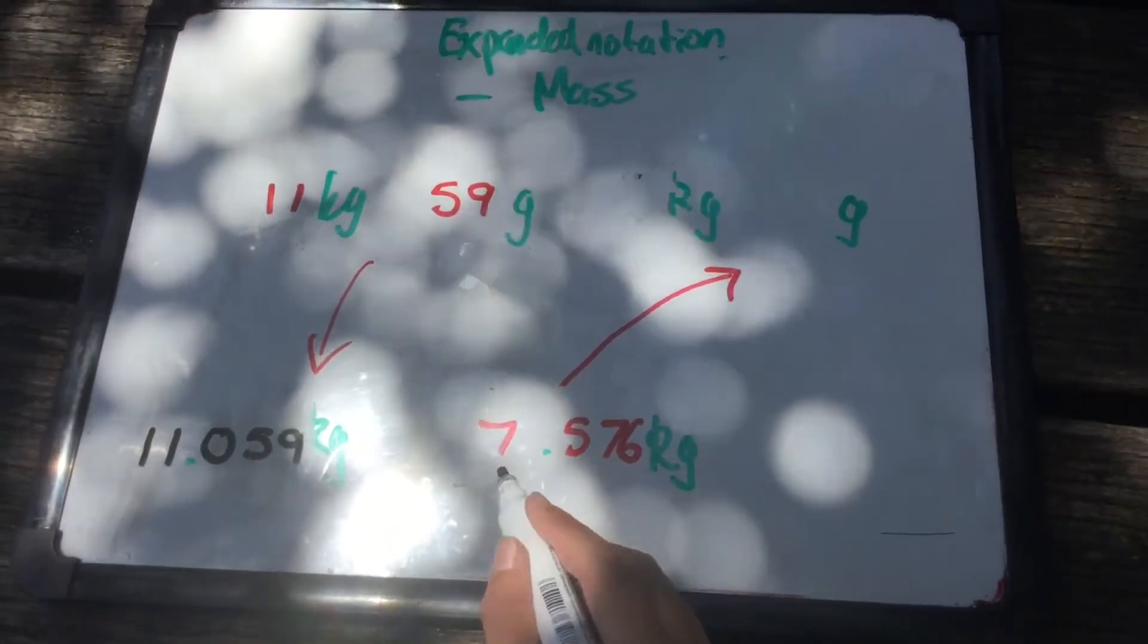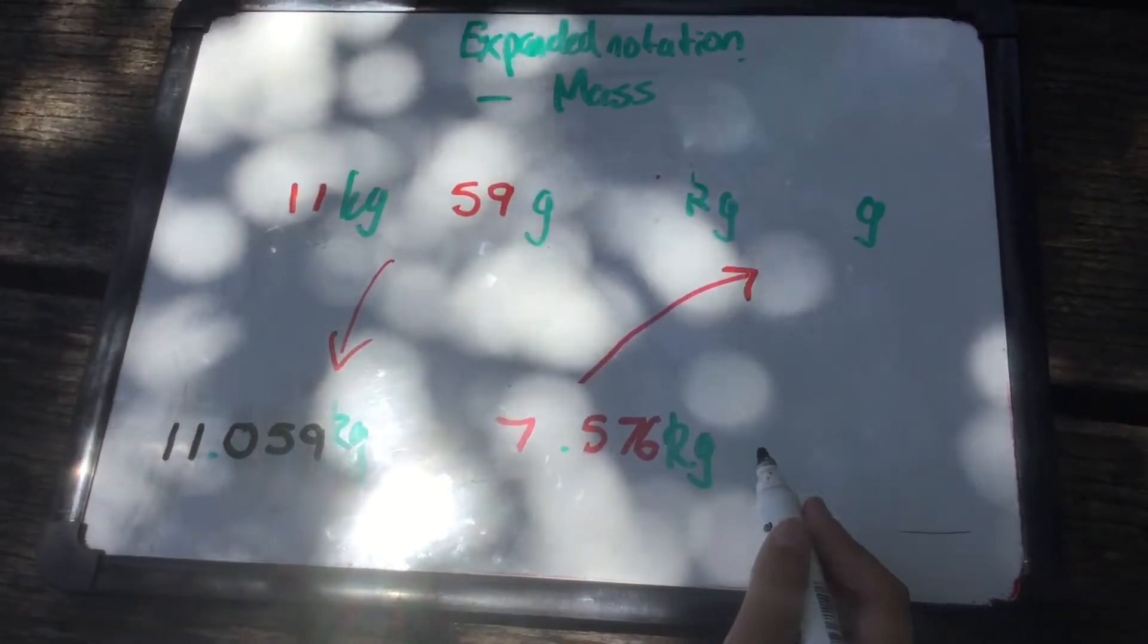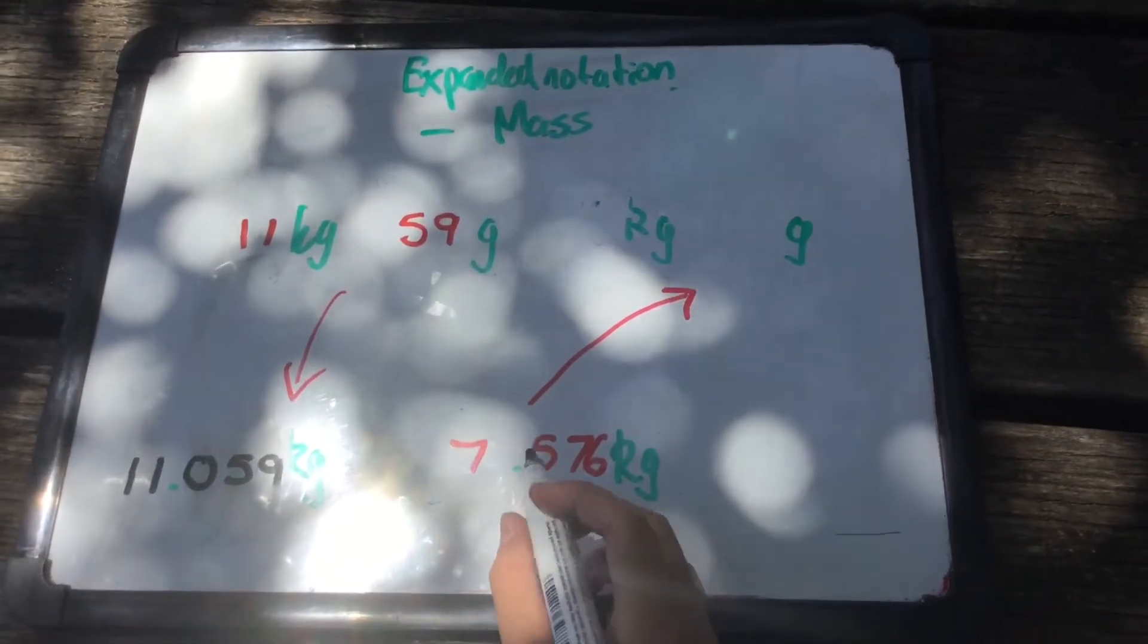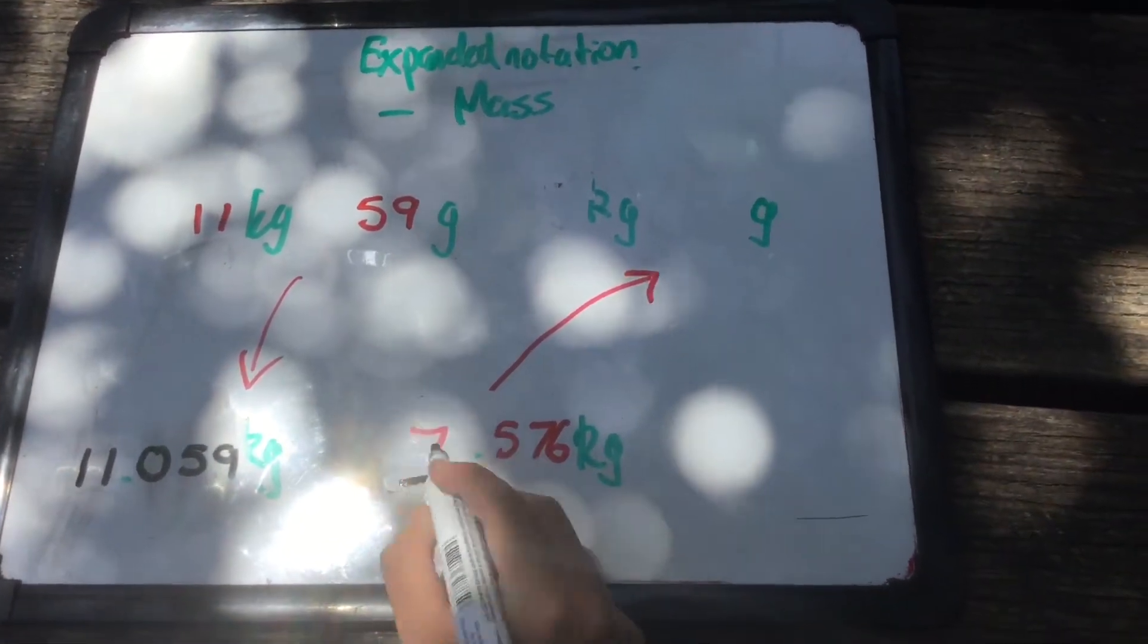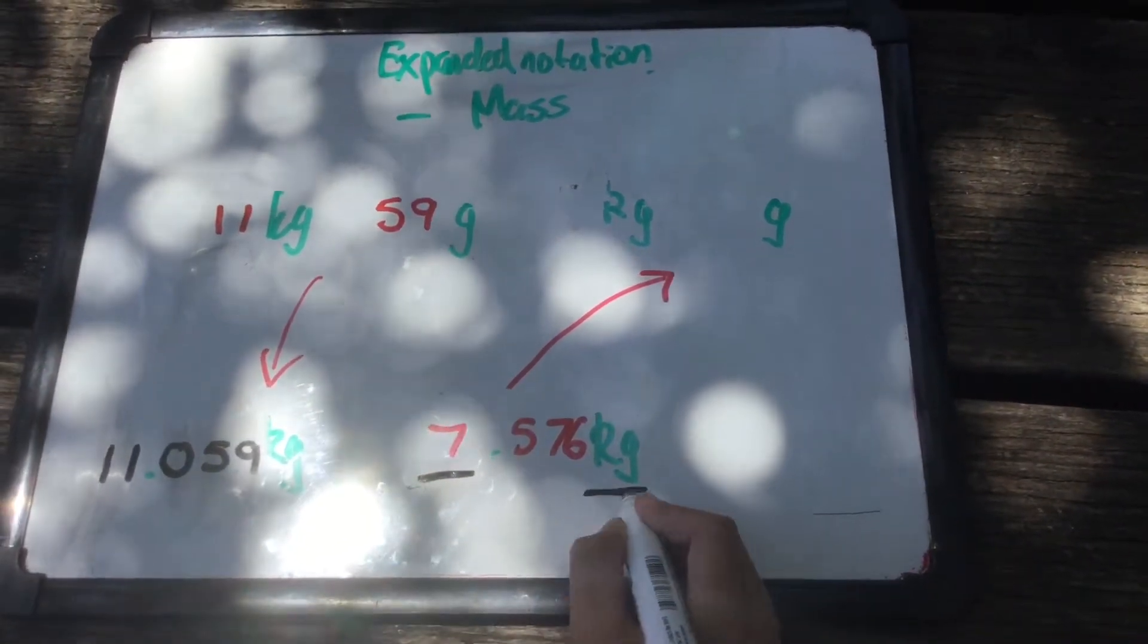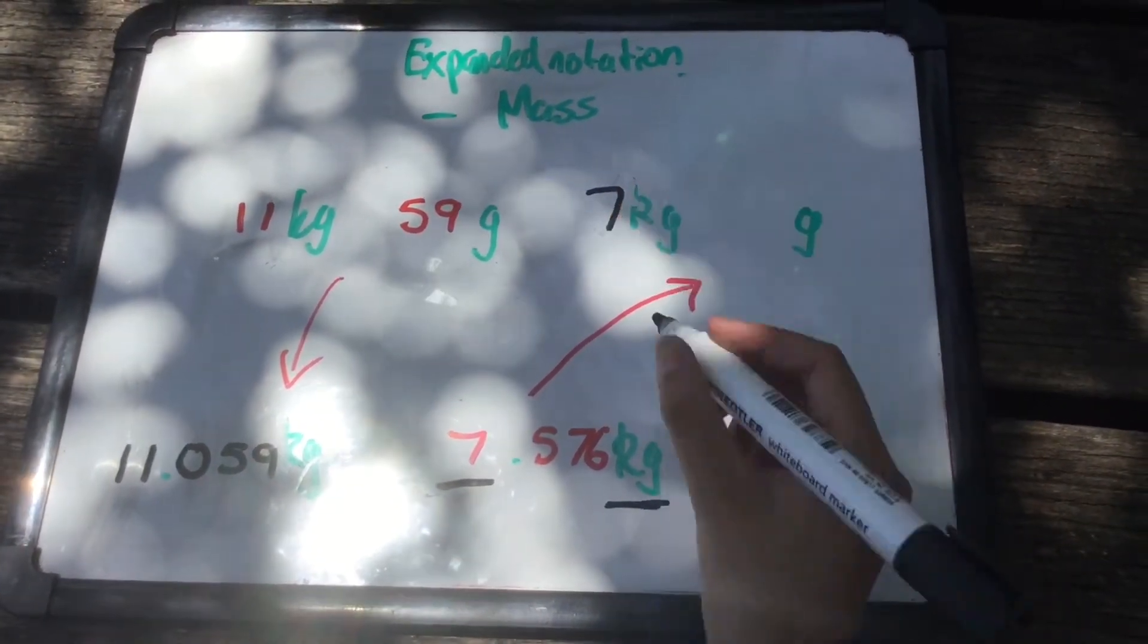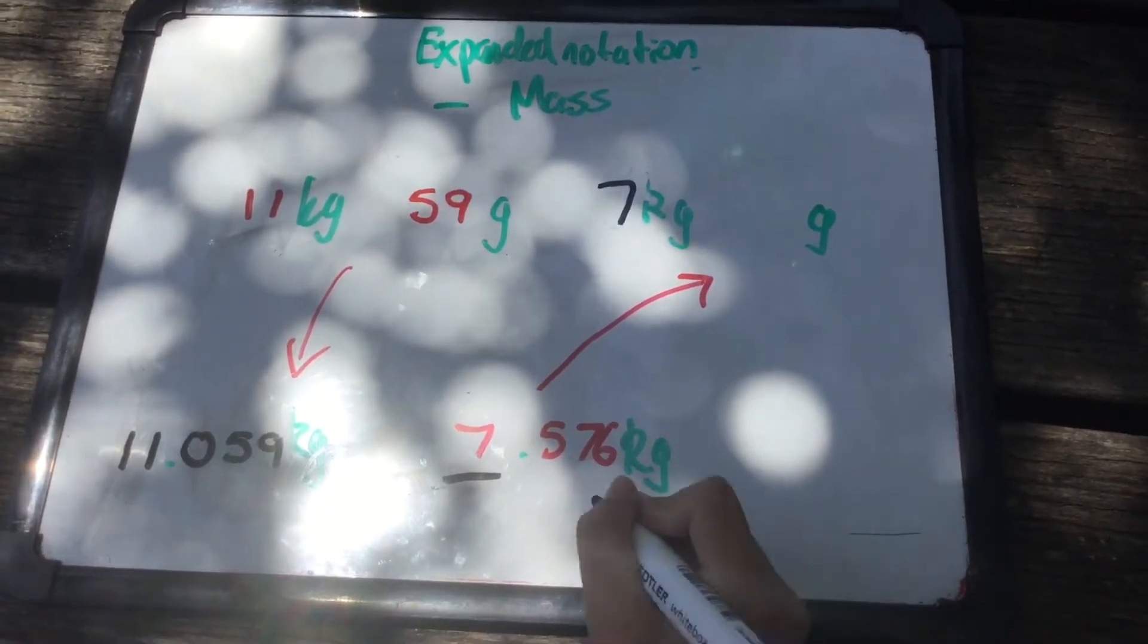Now we are going to convert 7.576 kilograms to kilograms and grams. So what we have to do first is we have to look at the whole number. The whole number should always equal to what the units are. So 7 kilograms goes here, and then 576 grams.